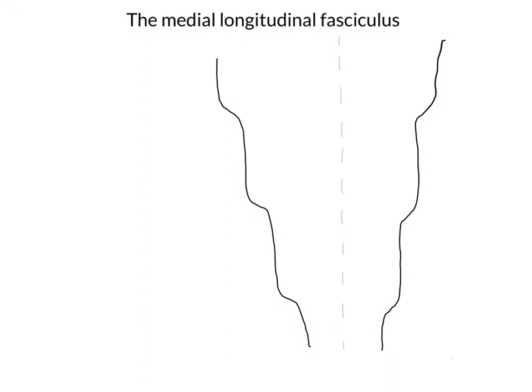The next thing I want to draw on is some of the brainstem nuclei involved in moving the eyes. Eye movements are mediated by the oculomotor, trochlear, and abducens nerves. These nerves contain lower motor neurons which supply the different extraocular muscles, and the cell bodies of those lower motor neurons reside within discrete nuclei within the brainstem — just like the ventral horn in the spinal cord. In red, I'm going to draw on the oculomotor nuclei.